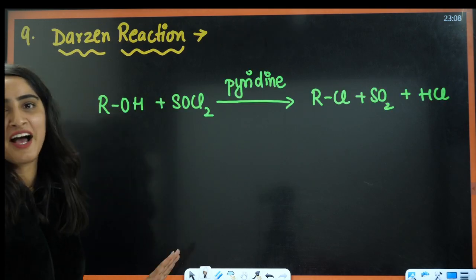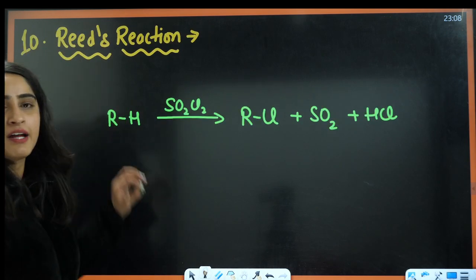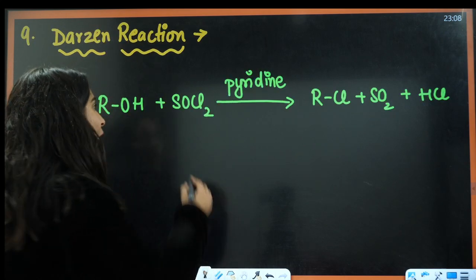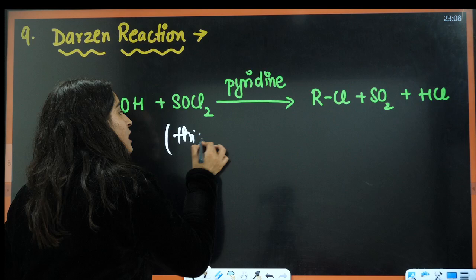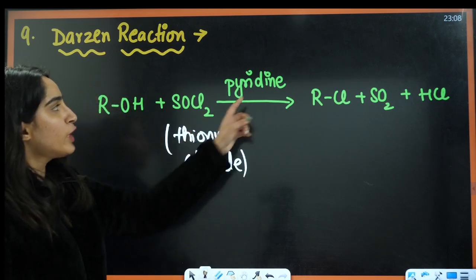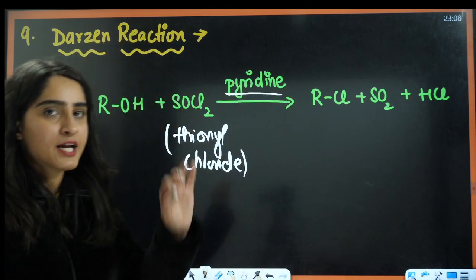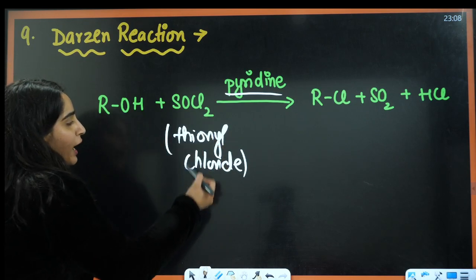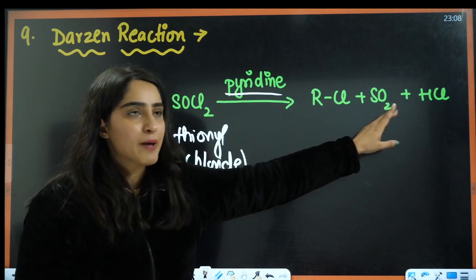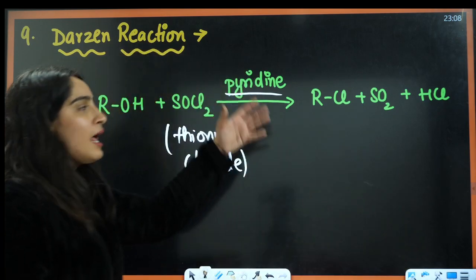Next is Darzen reaction — like a Tarzan movie. In Darzen reaction, we use thionyl chloride (SOCl₂) and pyridine. If we are not using pyridine, it will follow intramolecular substitution. The OH part of the alcohol reactant is replaced by Cl, and the by-products SO₂ and HCl vaporize. This is a very good method for preparing alkyl halides.